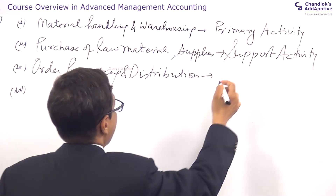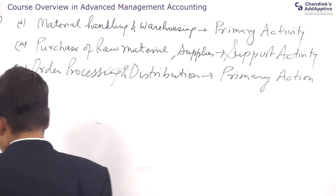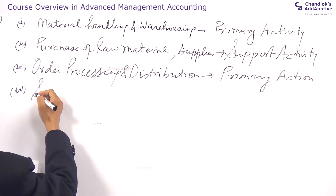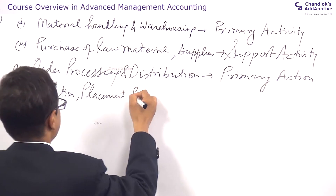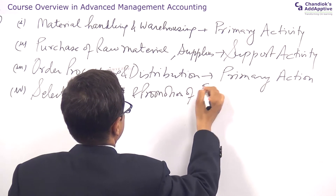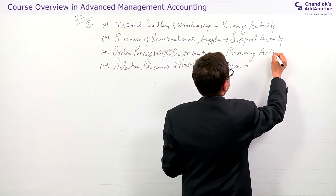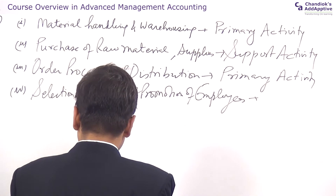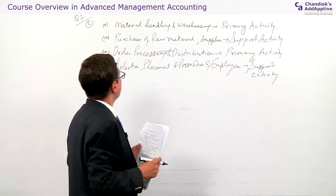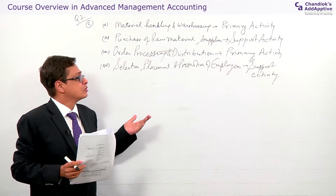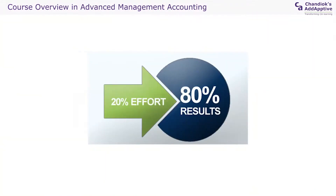Each section carries one mark, so it's more a mathematical scenario where you can secure full marks. The fourth item is selection, placement, and promotion of employees. This is something which is supporting the business, therefore it is a support activity. One mark each for each section.